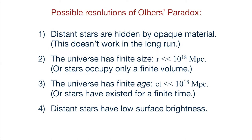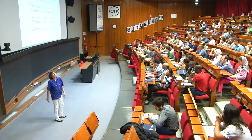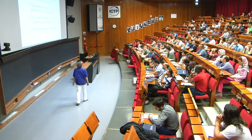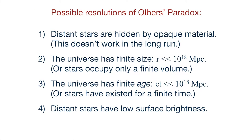You can resolve it using method number two: just say the universe isn't infinite. If the universe comes to a halt at some distance much smaller than 10 to the 18 megaparsecs, then the night sky will be dark. This also works if the universe is infinitely large but stars only occupy a small finite volume. A third possible resolution, slightly more subtle, is that perhaps the universe is of finite age. Since light travels at a finite speed, if the age of the universe is t and c times t is much smaller than 10 to the 18 megaparsecs, then stars beyond this distance won't have had time to send light to us.